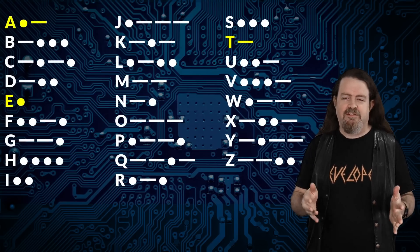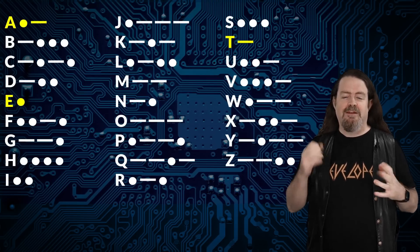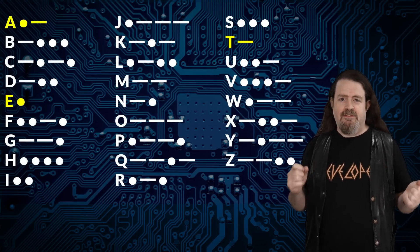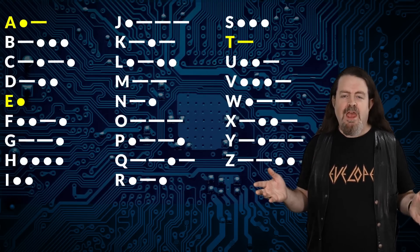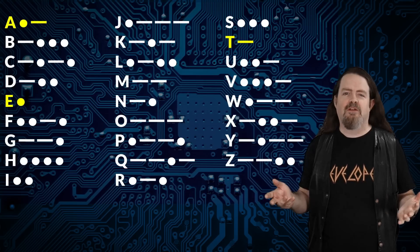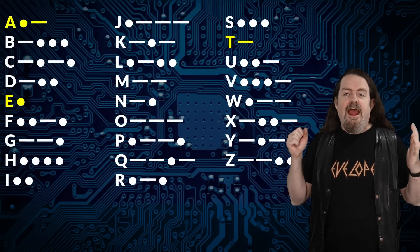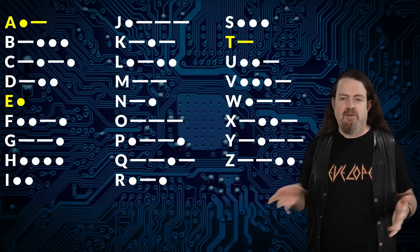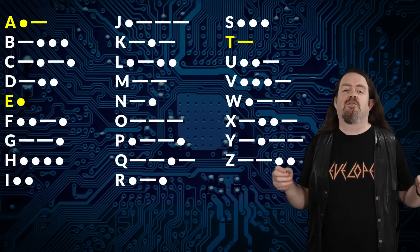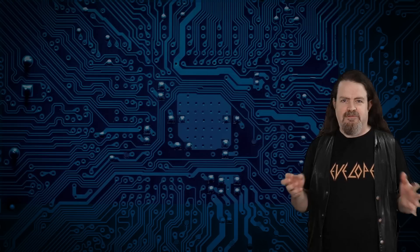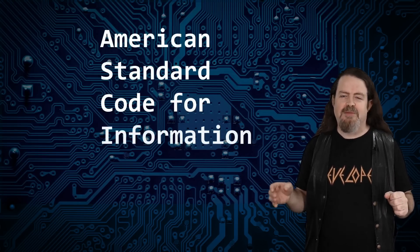Every data point in a Morse code message is either a dot, a dash, or a space. The dits and dahs within a single letter are separated by one space, there are three spaces between letters, and seven spaces between words. So Morse code is kind of a non-starter. And for all kinds of reasons, folks don't want to embrace EBCDIC as a standard. And so the American Standards Association, which would later change its name to the American National Standards Institute — ANSI, you've probably heard of them — they set out to design a binary encoding system for text.